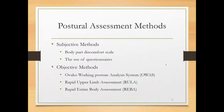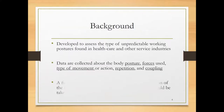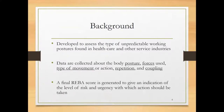We had discussed PAS and RULA methods in the previous segments, and now we will discuss the REBA method. In the REBA method, the data collected about the body includes posture, forces, type of movement, repetition, and coupling. Some of these factors are the same as in the RULA method, like posture, forces, and movement, and in addition there are some other factors as well.